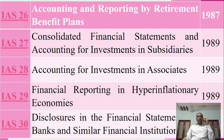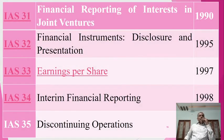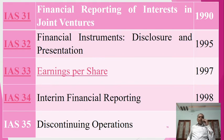IAS 30 discusses financial statements of banks and similar financial institutions, established in 1990. IAS 31 covers financial reporting of interests in joint ventures, established in 1990. IAS 32 is on financial instruments — disclosure and presentation — established in 1995. IAS 33 is on earnings per share (EPS), established in 1997. IAS 34 is on interim financial reporting — how to prepare reports for an interim period — established in 1998. IAS 35 covers discontinuing operations, established in 1998.